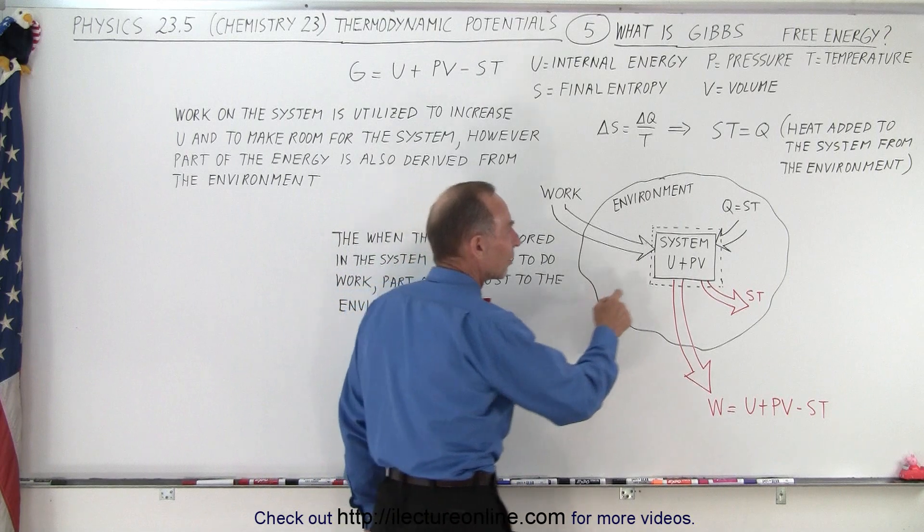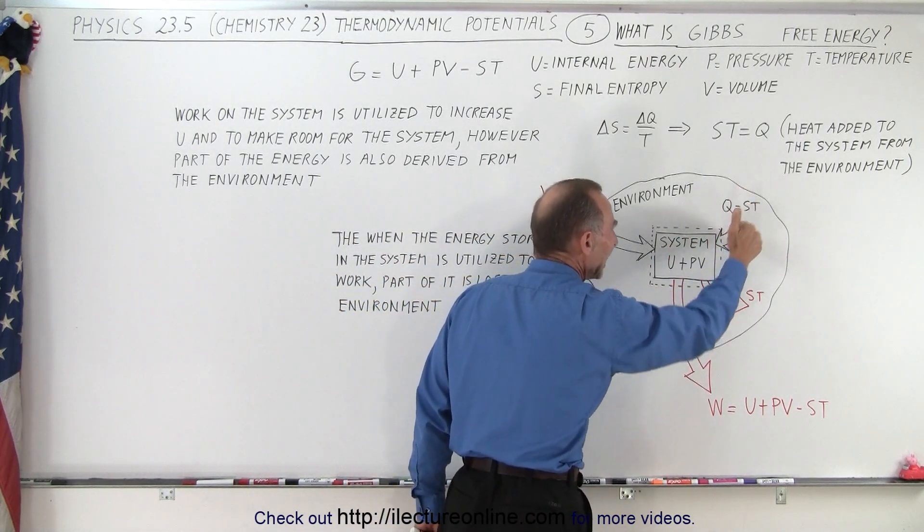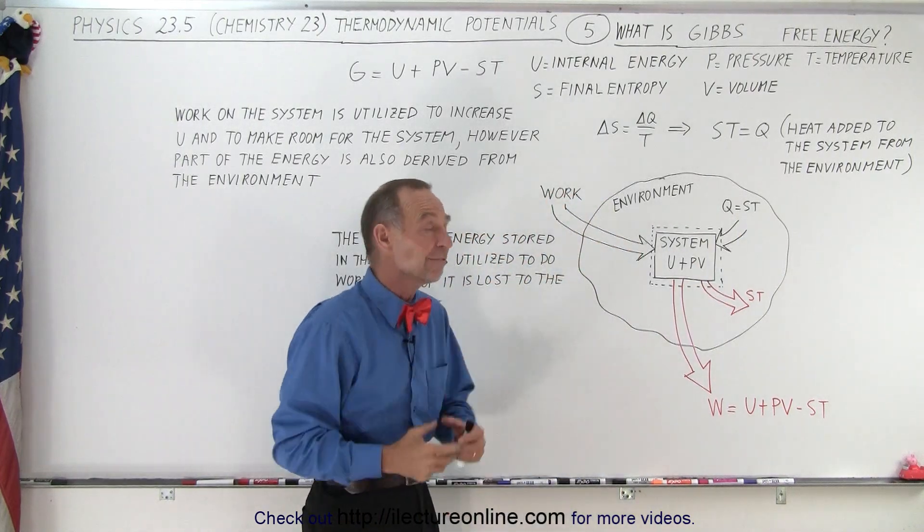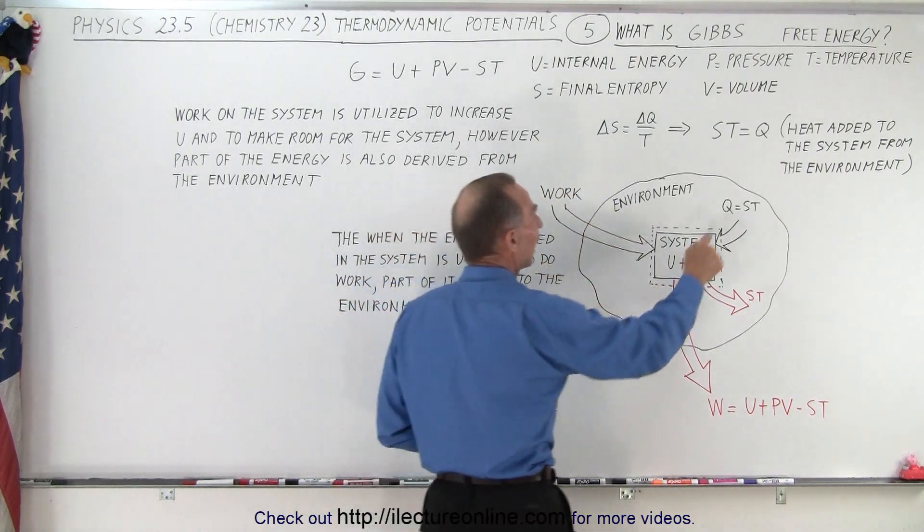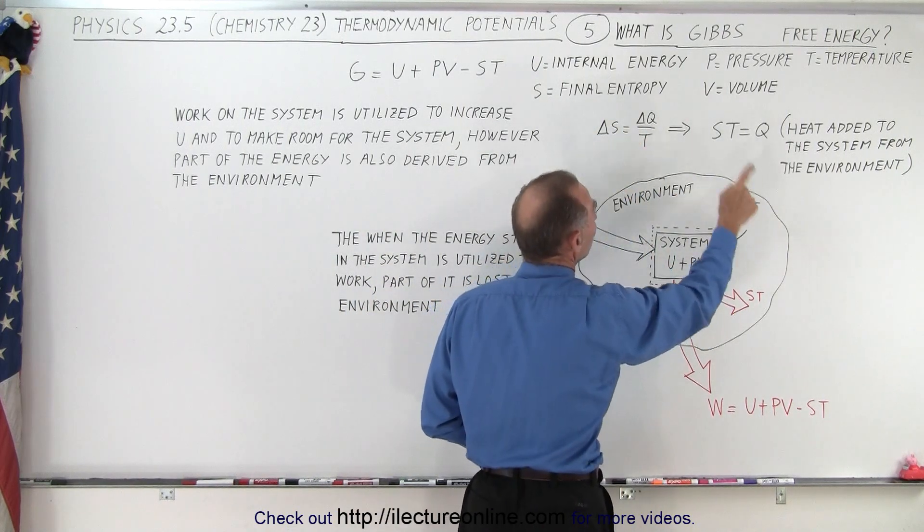We also realized that some of the energy required to do so also came from within the environment, and we call that Q, the heat added to the system from the environment. Q is equal to S times T, where S is what we call the final entropy and T is called the temperature.